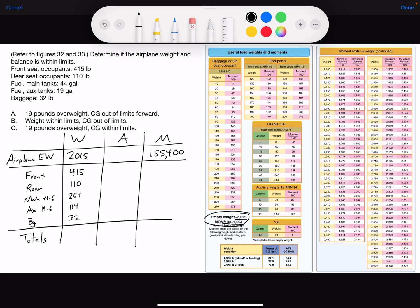To determine the moment for each station, take the weight multiply by the arm to give you a moment. In the front seat we have 415 pounds. If you go to occupants on the table front seat, I do not see 415 pounds, but we'll use the arm of 85 to get the moment. So 415 multiplied by 85 inches gives us a moment of 35,275 inch pounds.